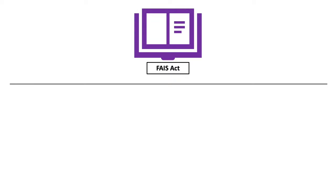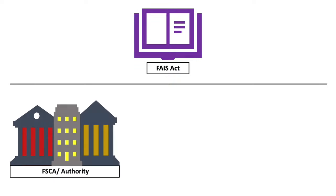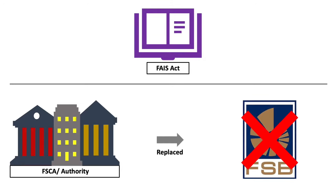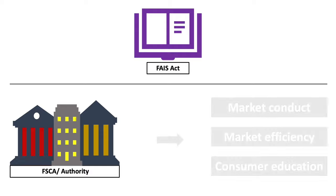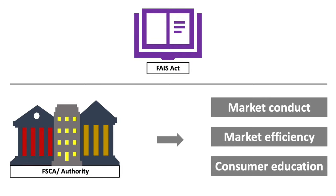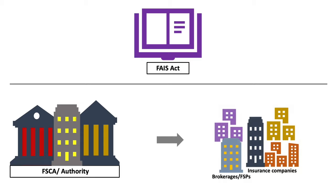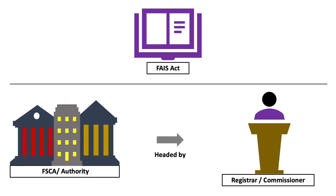The FACE Act and subordinate legislations talk about role players who help to enforce its rules. Let's start with the FSCA. The Financial Sector Conduct Authority, or FSCA for short, has replaced the old FSB. The FSCA is there to police the FACE Act and is responsible for market conduct, market efficiency and integrity, as well as consumer education. It regulates the non-banking side of financial services, such as insurance services, and is headed up by a commissioner. Sometimes the words registrar or authority are used to refer to the FSCA or the commissioner.